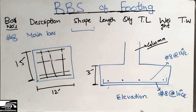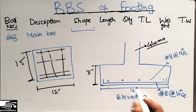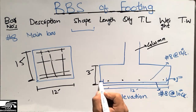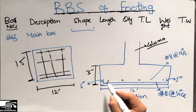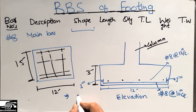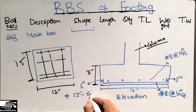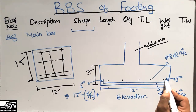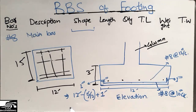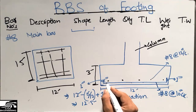To calculate the length of the bar: one dimension is 12 foot. We subtract the clear cover of 3 inches on each side — that is 6 inches total — and add the two hook lengths of 6 inches each, giving 12 inches, which is 1 foot. So: 12 foot minus 6 inches (converted to foot) plus 1 foot for hooks gives a bar length of 12.5 foot.